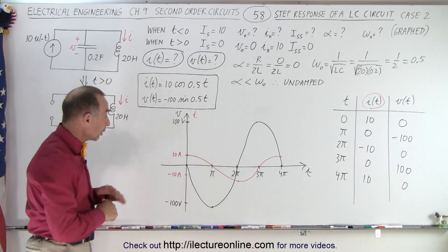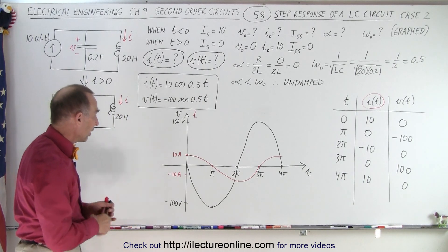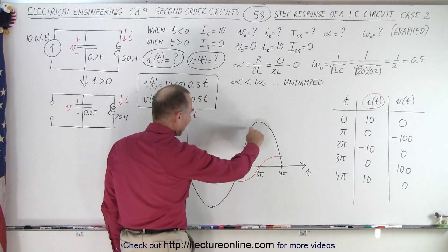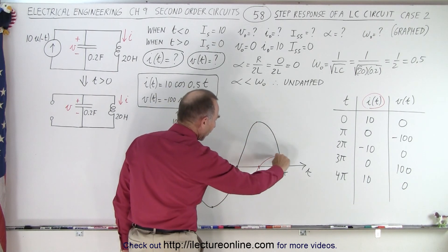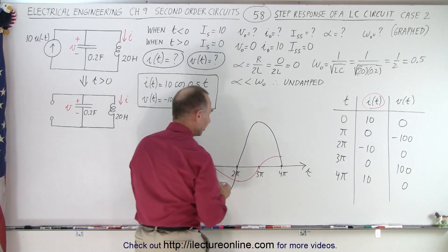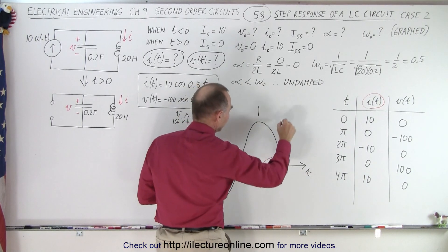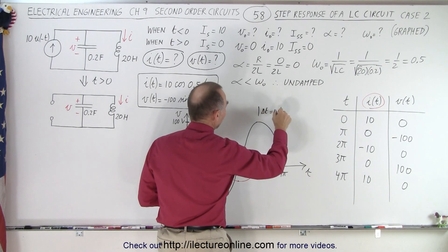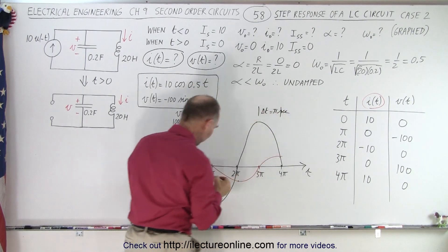So what can we conclude from this result? Well, it turns out that if we take a look at the curves, notice that the voltage reaches the maximum first, and then the current follows, and there's a time difference of π seconds. So we can see that the difference between the maximum of the voltage and the maximum of current, that's delta T, and that's equal to π seconds.